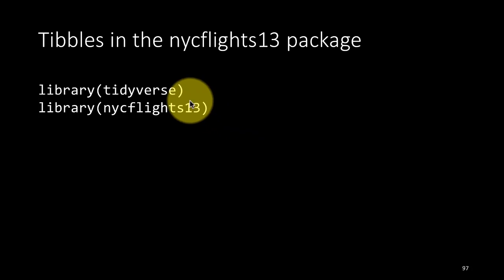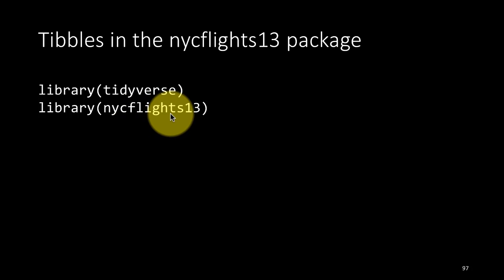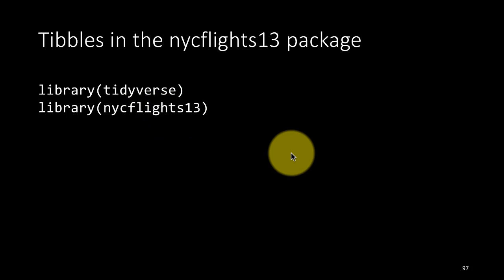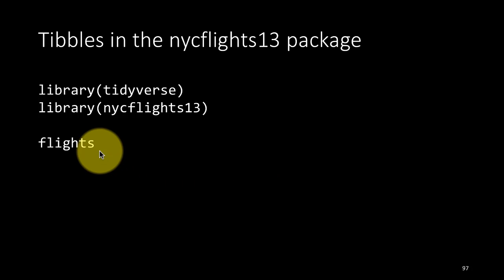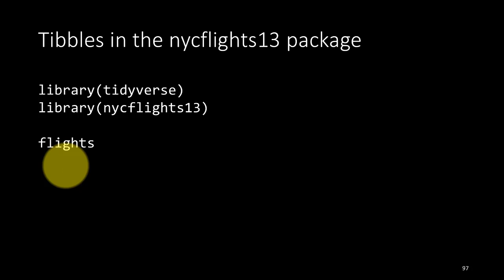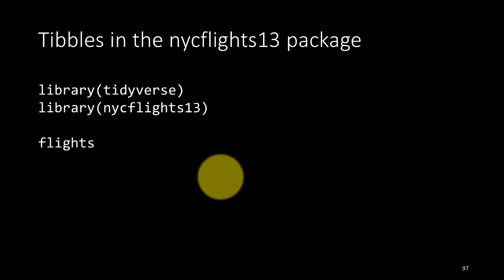The nycflights13 package has several tibbles. If you load library tidyverse and then library nycflights13, this package makes available several tibbles to us. One tibble we are already familiar with is flights. We've done a lot of work with this tibble. It gives us information about all the flights that occurred in the year 2013 which originated in one of the three New York City airports: LaGuardia, JFK, or Newark.